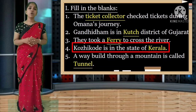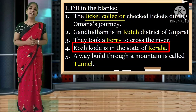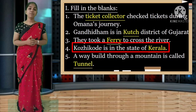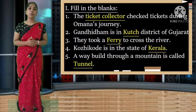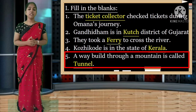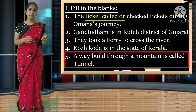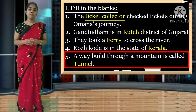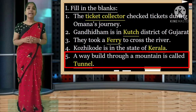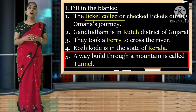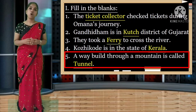Fourth: Kozhikode is in the state of Kerala. Spelling K-E-R-A-L-A. Fifth: a way built through a mountain is called a tunnel. In between the mountains, if you want to go, a way will be built. That is called a tunnel. Spelling: T-U-N-N-E-L. A way built through a mountain is called tunnel.